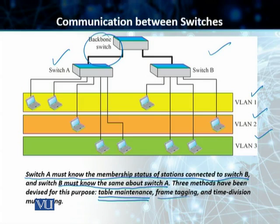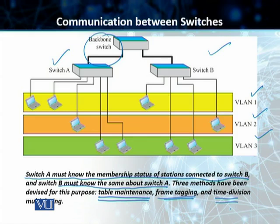The second method is called frame tagging. In the case of frame tagging, when a frame is traveling between switches, an extra header gets added to the MAC frame to define the destination VLAN. The frame tag is used by the receiving switch to determine the VLAN for the receiving broadcast message. The third method is time division multiplexing (TDM), where the connection between the switches is divided into time-shared channels. If the total VLANs in a backbone is five, each trunk is divided into five channels, and traffic for VLAN 1 travels in channel 1, VLAN 2 in channel 2, and so on. The receiving switch determines the destination VLAN by checking the channel from which the frame arrived.